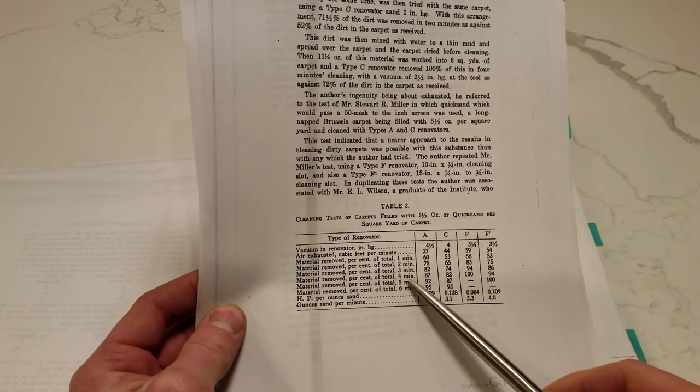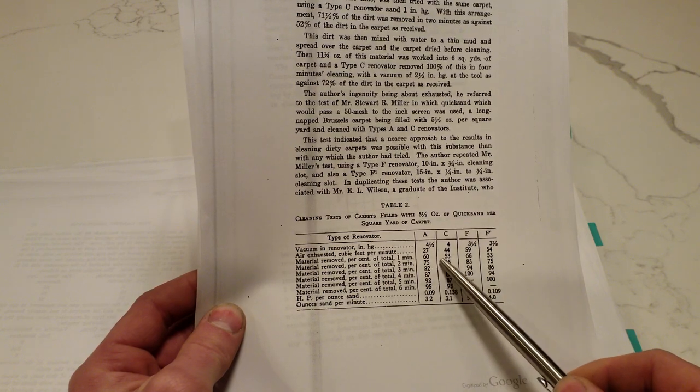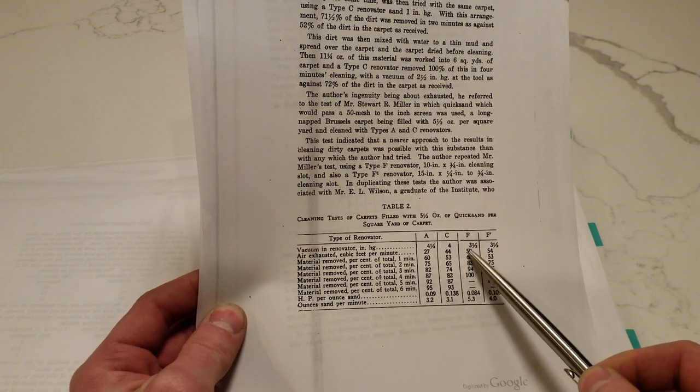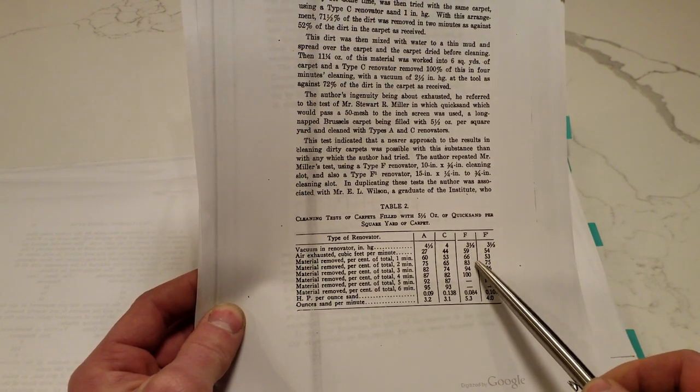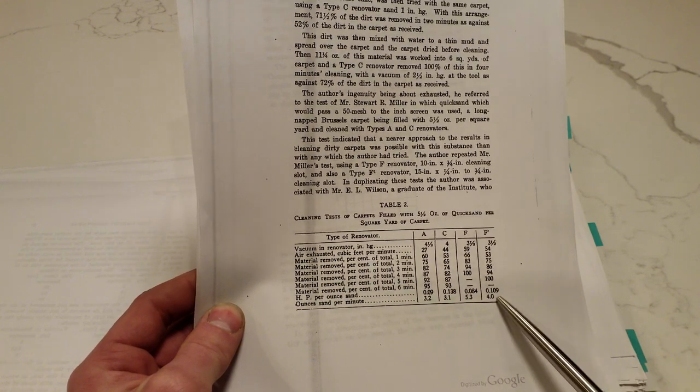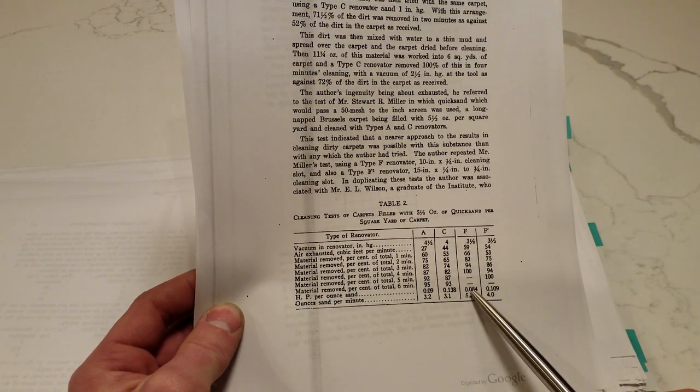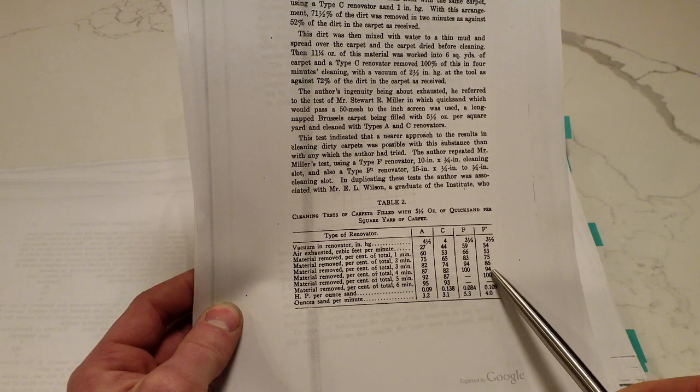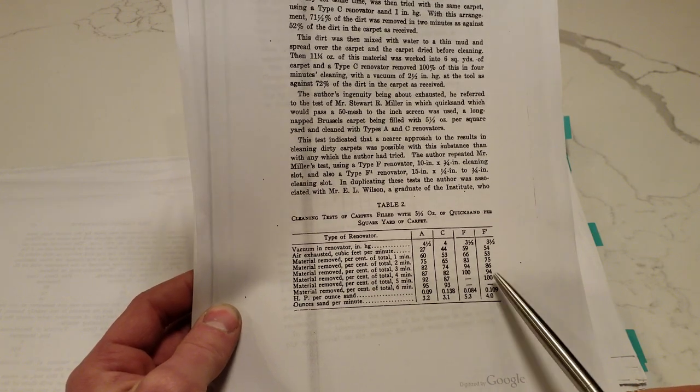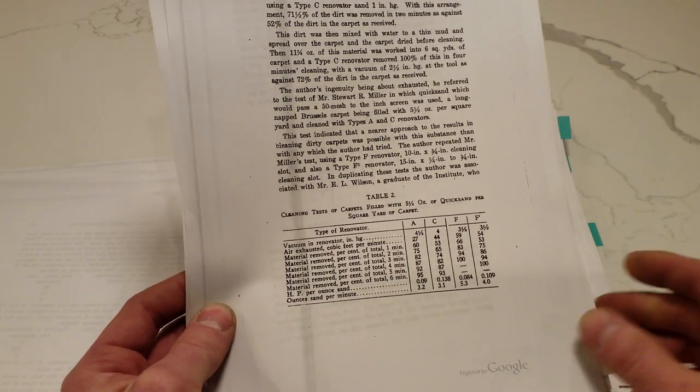So you can see type A would be narrow slot. Type C with the inrush slot. Type F and F1, the Spencer wide tools. And you can see they, in this test, did the best job. There's some other tests in here where they didn't do the best job, or they did a job comparable to type A.